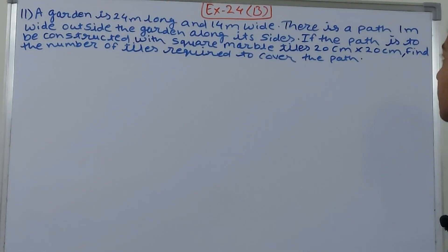...long and 14 meters wide. There is a path 1 meter wide outside the garden along its sides. If the path is to be constructed with square marble tiles 20 centimeter by 20 centimeter, find the number of tiles required to cover the path.